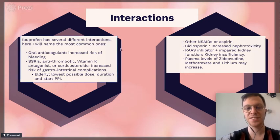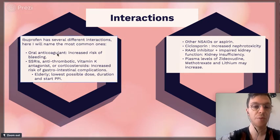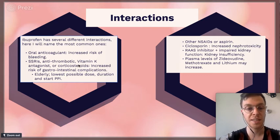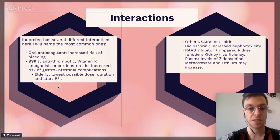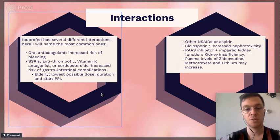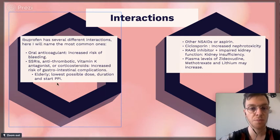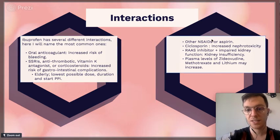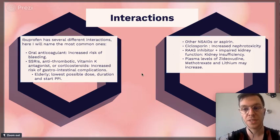Naproxen has many interactions. When combined with oral anticoagulants, there may be an increased risk of bleeding. When combined with SSRIs, antithrombotics, vitamin K antagonists, or corticosteroids, there may be an increased risk of gastrointestinal complaints — especially in elderly. Always start the lowest possible dose for the shortest duration, and consider using a proton pump inhibitor like omeprazole as extra protection. Don't combine with other NSAIDs or aspirin, as this may increase side effects.